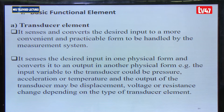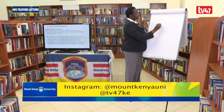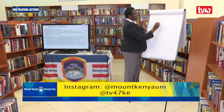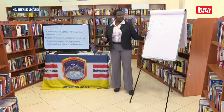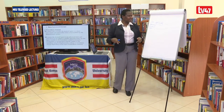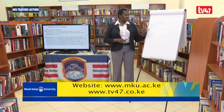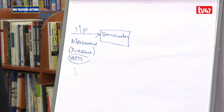For example, when measuring voltage with a multimeter, the leads are what you can term as the transducer because they are in direct contact with the voltage. The input variable to the transducer could be pressure, acceleration, temperature, voltage, or any other measurement — whatever variable you are trying to measure.